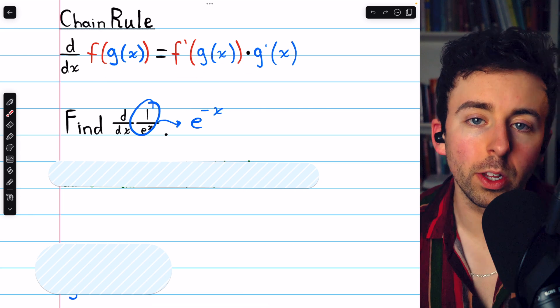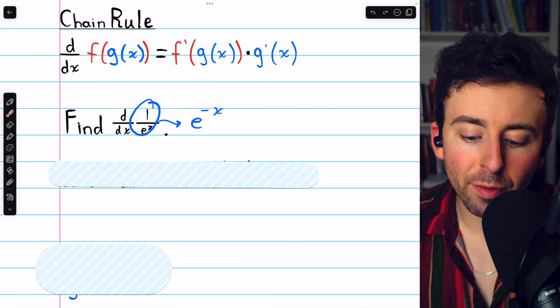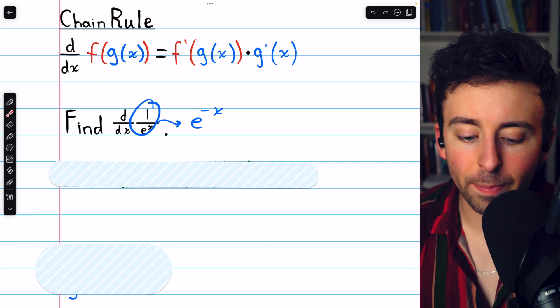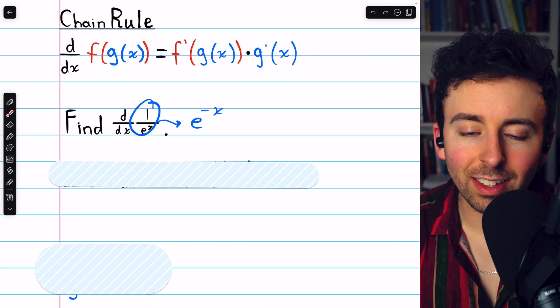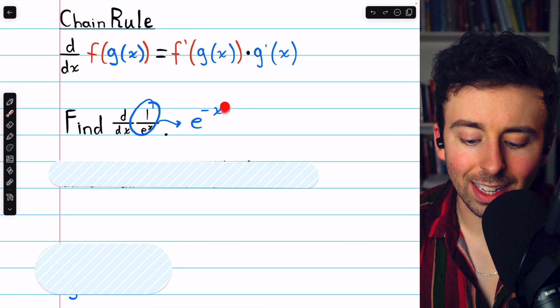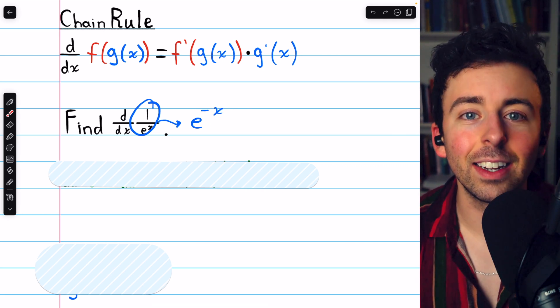Here the chain rule is written for your reference in case you've forgotten. f prime of g times g prime. f is the outside function. In this case, that's e to the x. And g is the inside function. In this case, that's the negative x that's inside the exponent.